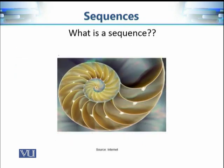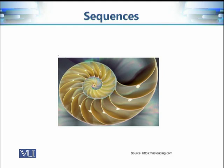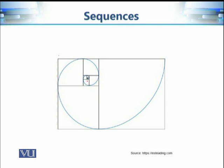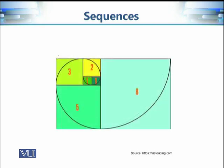Another example is a seashell. Apparently there is no pattern in this seashell, but if we follow this curve we can find a pattern. If we confine this curve in squares such that the curve passes through the outer corners of each square — here is one square, another square, another square — we see squares going inward and outward, with the curve passing through the outer corners of each square.